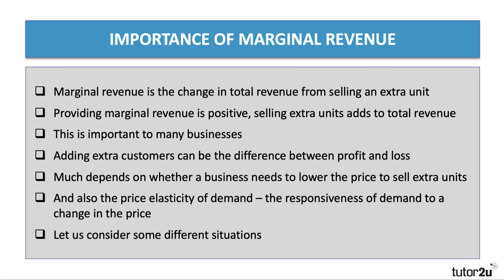A quick reminder: marginal revenue is the change in total revenue from selling an extra unit. And providing the marginal revenue is positive, then if a business sells extra units, that's going to add to their top line — it's going to increase their total revenue. Many businesses have one of their objectives as the aim of increasing their revenue. This is important because squeezing those extra sales can be the difference between making a profit or making a loss. So marginal revenue can be very significant for businesses.